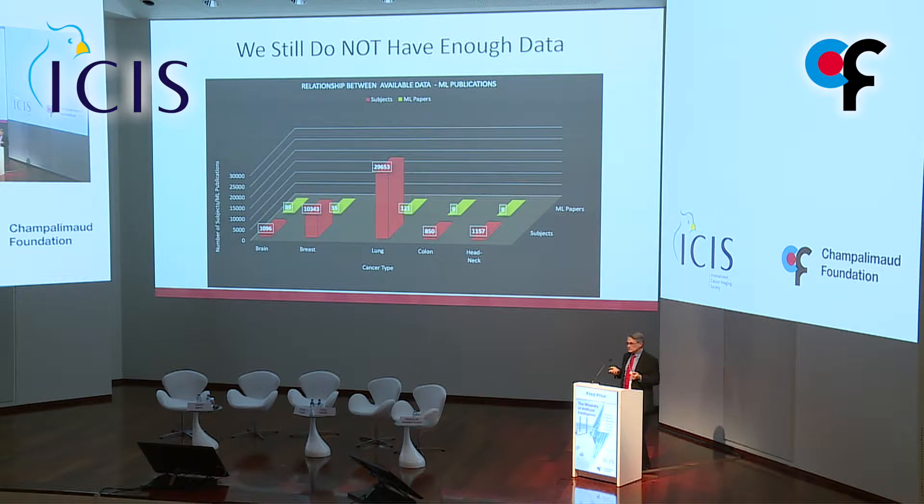Looking at our top ten collections by number of human subjects, lung cancer is by far the largest because we have data from the U.S. National Lung Screening Trial — 27,000 subjects. The number of machine learning and radiomics publications correlates with data volume: the more data, the more publications. The exception is brain — there's been a lot of work in GBMs, largely because of the Cancer Genome Atlas and the cross-linking of genomics with imaging features, and also because normal datasets are available.